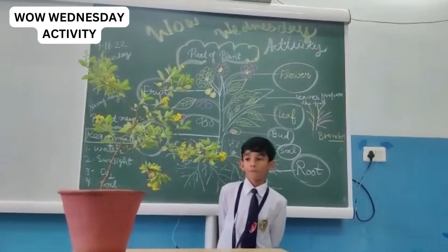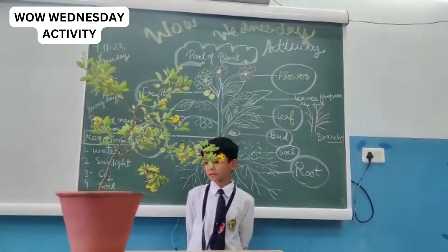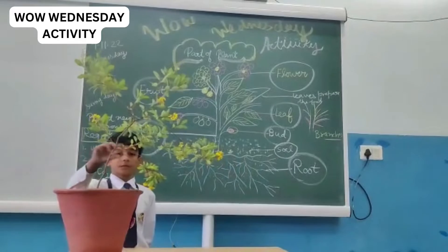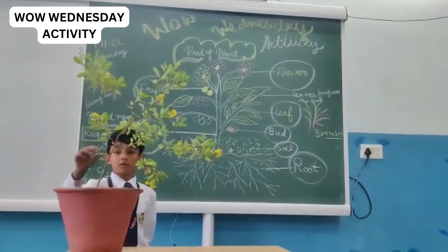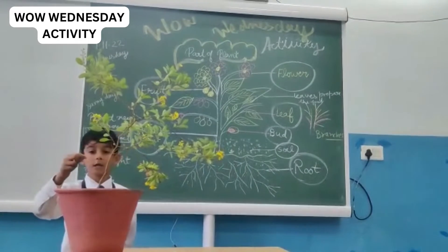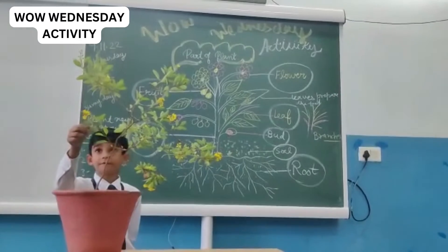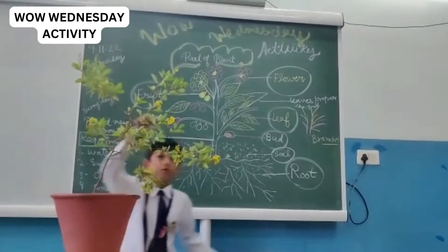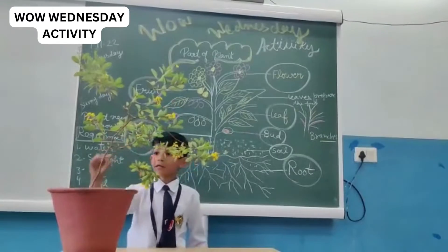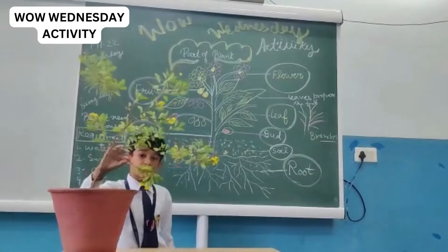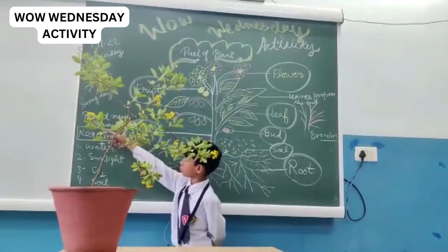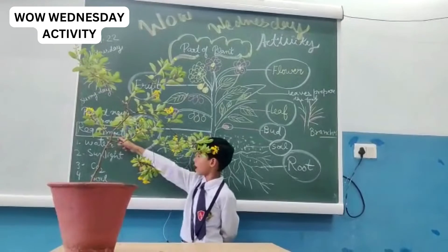Plants have a part: stems, roots, soil, leaves, flowers, birds, and branches. Plants need to grow: environment,